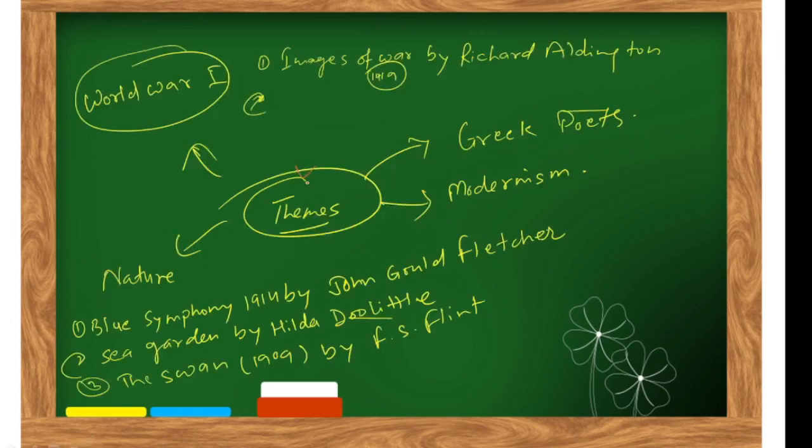If we talk about the themes of the works: World War I was a theme. 'Images of War' by Richard Aldington, published in 1919, is one example. Greek poets provided inspiration and examples. Modernism was obviously a theme since this was a subset of modernist poetry.